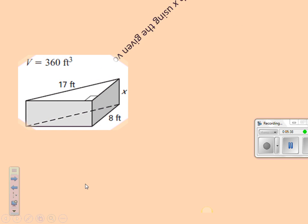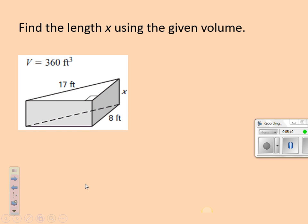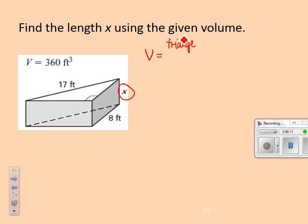Let's try another one — write this one down. We're finding the length of x using the given volume. What kind of prism do I have? I have a triangular prism. The volume of a triangular prism is the area of the base times the height of the prism, and this time the area of the base is a triangle. So we need the area of the triangle times the height of the prism.